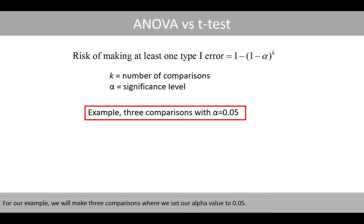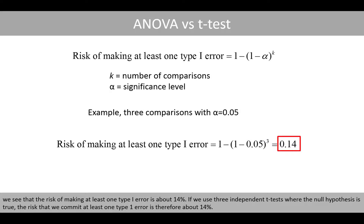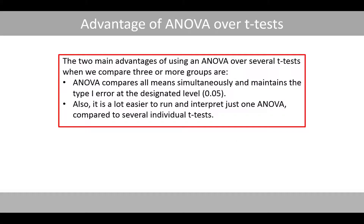For our example, we'll make three comparisons where we set our alpha value to 0.05. If we plug in the value of 0.05 in the equation and set k to 3, we see that the risk of making at least one type 1 error is about 14%. If we use three independent t-tests where the null hypothesis is true, the risk that we commit at least one type 1 error is therefore about 14%. So, the two main advantages of using an ANOVA over several t-tests when we compare three or more groups are: first, ANOVA compares all means simultaneously and maintains the type 1 error at the designated level. Also, it is a lot easier to run and interpret just one ANOVA compared to several individual t-tests.